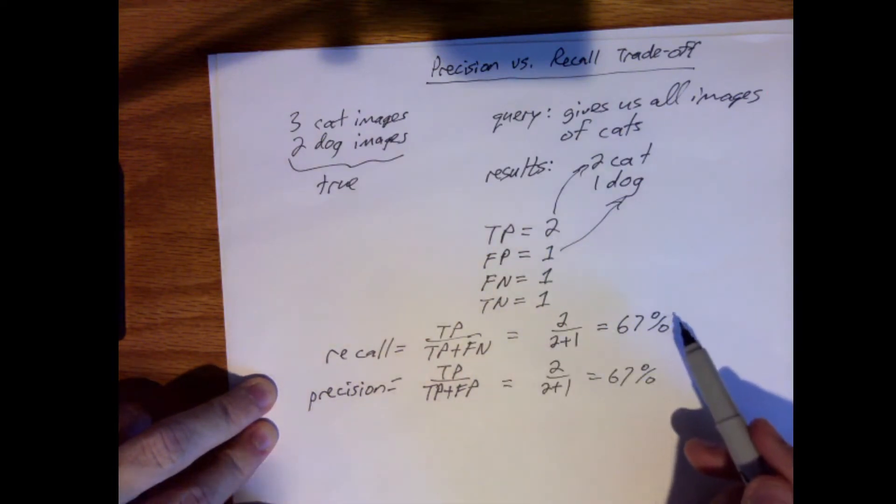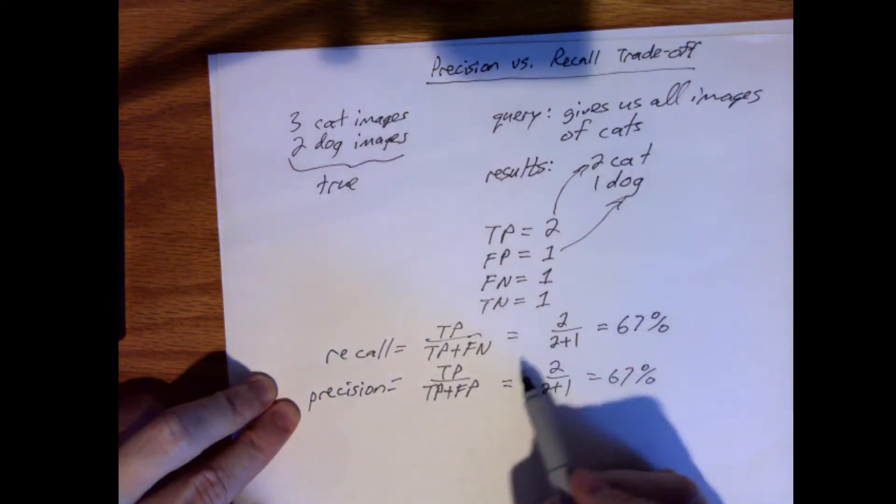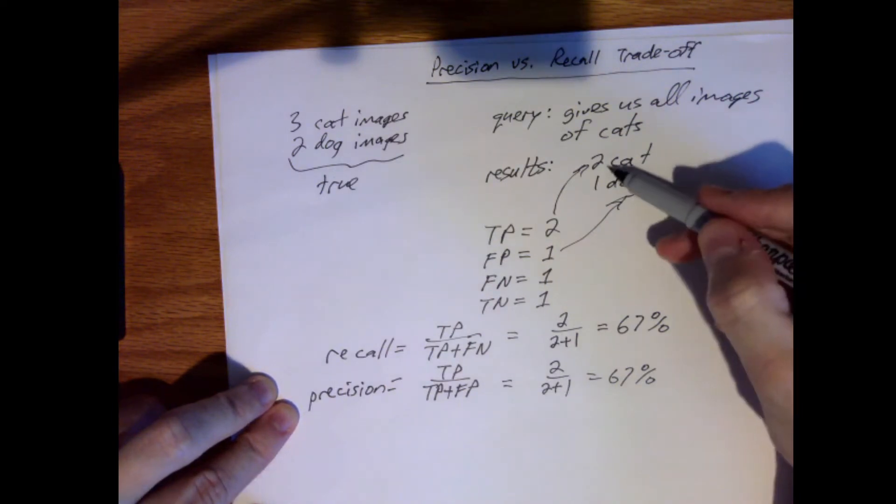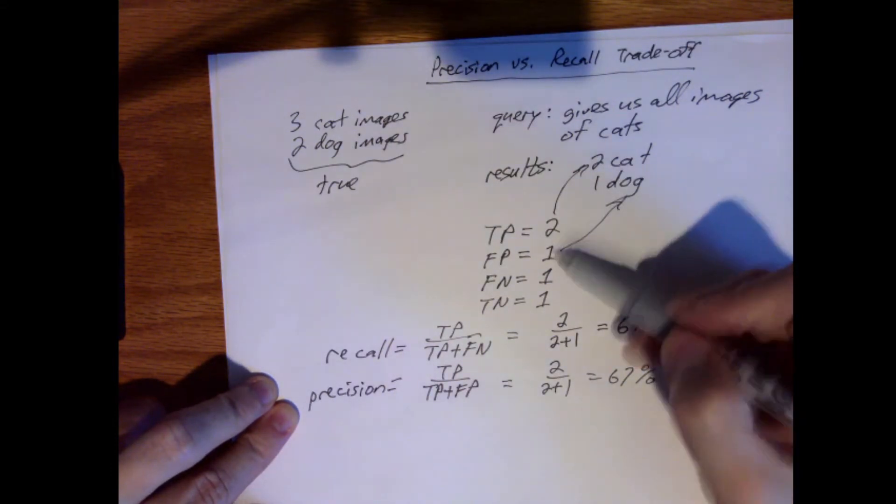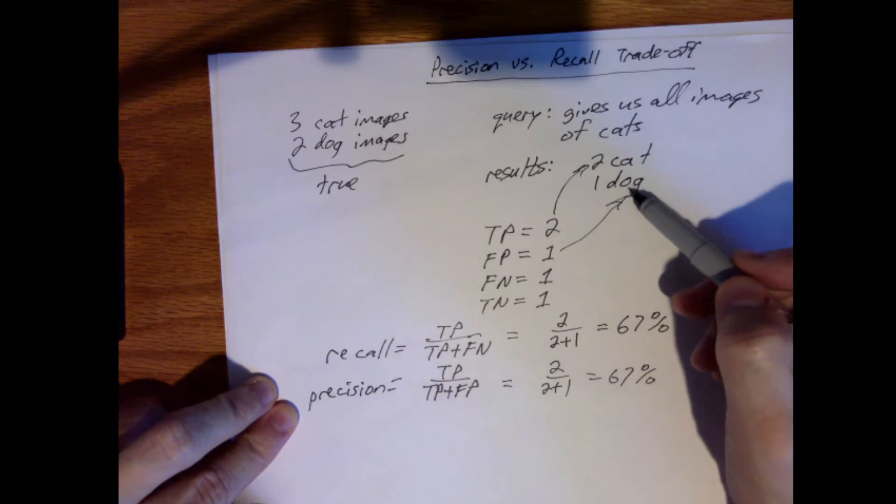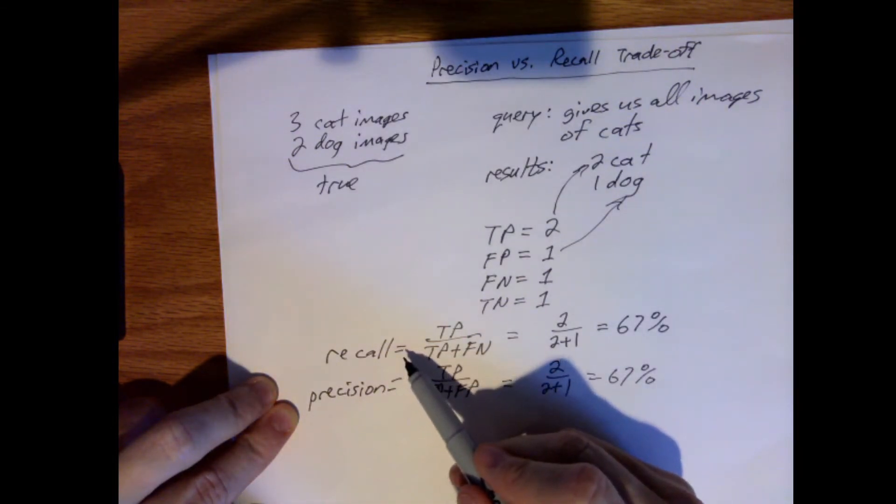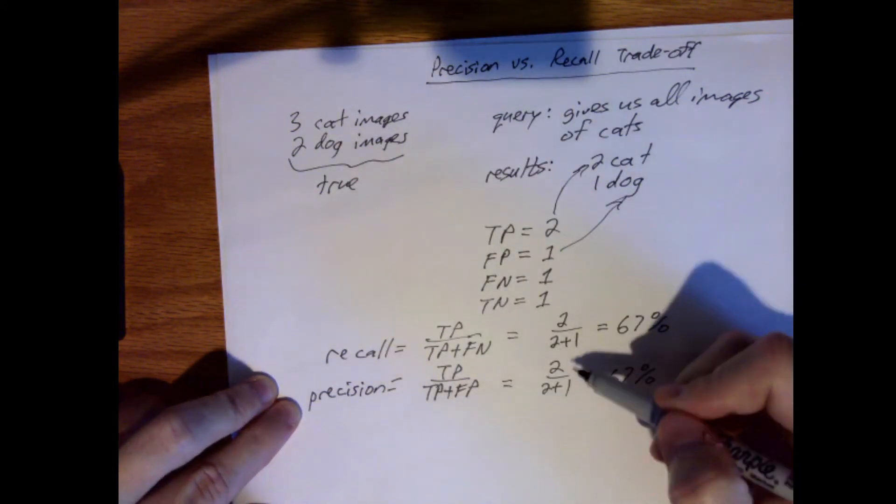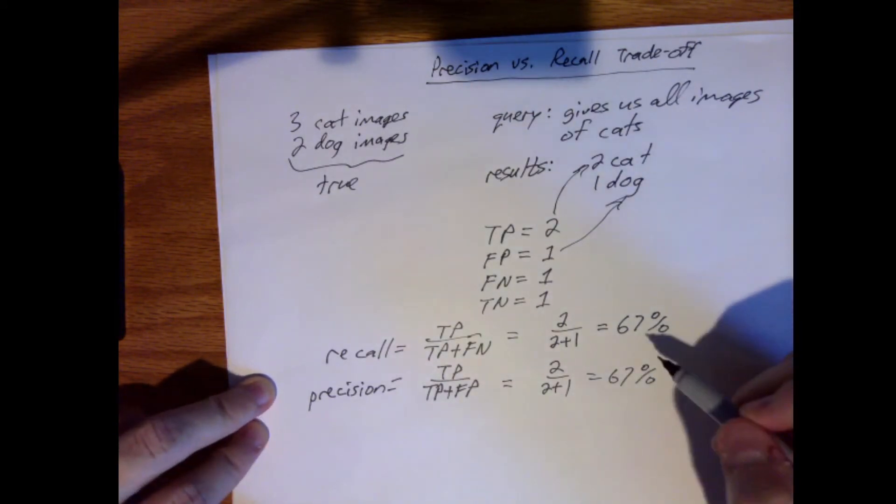In terms of precision, we will know how precise the results are. So this says, of the three values that were returned, how many of those were cats? So if we really had gotten two of the cat images plus both of the dog images here, our recall would have stayed the same because we got two out of the three possible cats. But now our precision would have been 50% because it would have been two fourths.